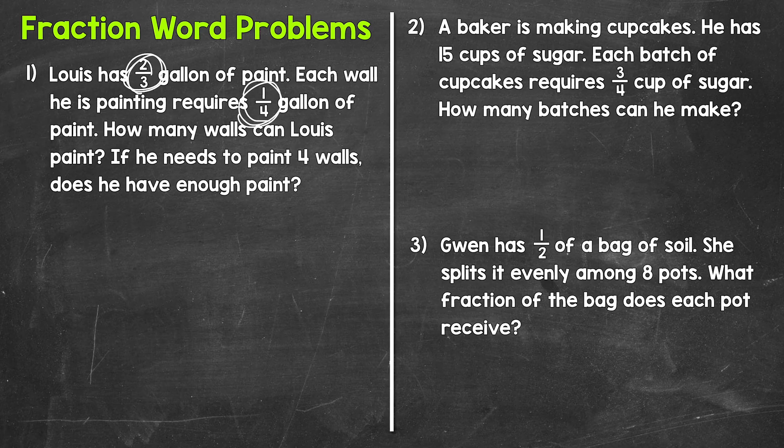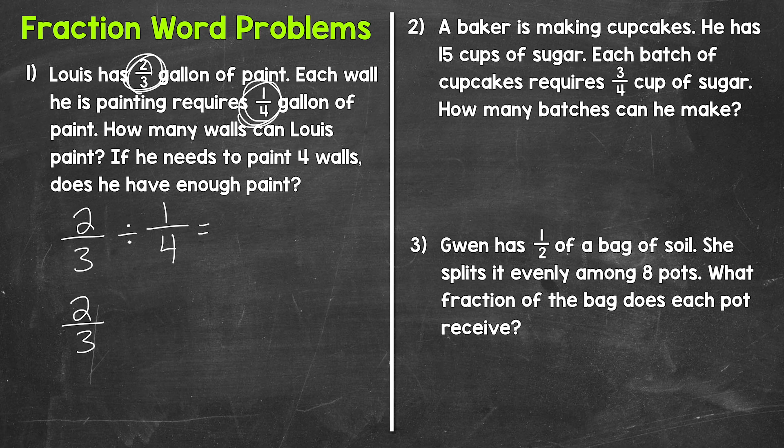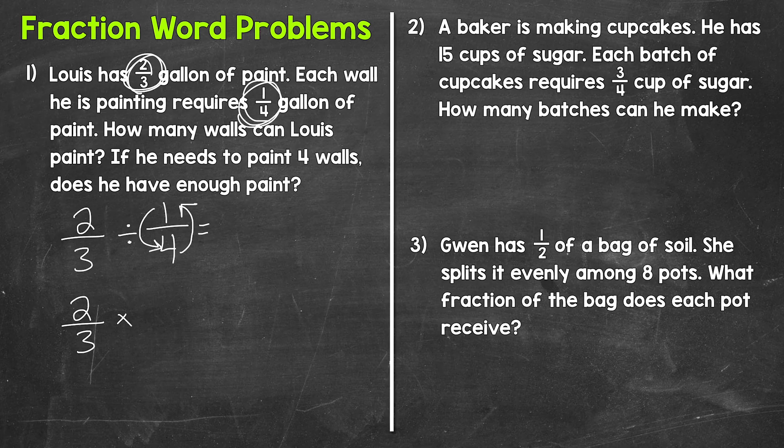So we need to do two-thirds divided by one-fourth. That's going to tell us how many walls Louis can paint and if he has enough for four walls. Now remember, when we divide fractions, we keep, switch, flip. So we keep the first fraction, then we switch to multiplication and flip our second fraction. So four is now the numerator and one is now the denominator.